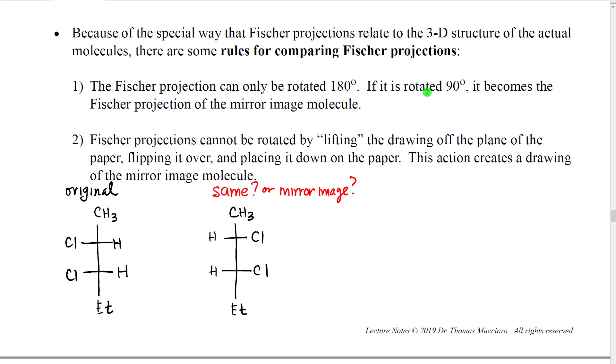In that case those would not actually be the same. When you take a Fischer projection and you rotate it 90 degrees, you mess up the implied wedges and dashes in the molecule and you in fact reverse them, causing the molecule to be the mirror image. So if we're comparing Fischer projections, Fischer projections will only be the same if they are rotated 180 degrees. If they are rotated 90 degrees then those Fischer projections become mirror images.